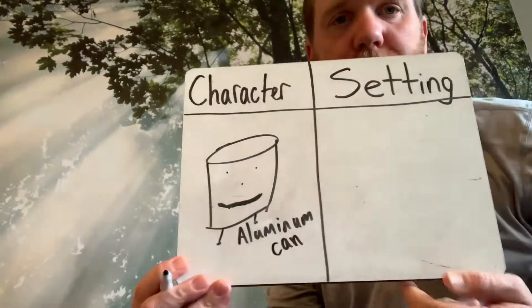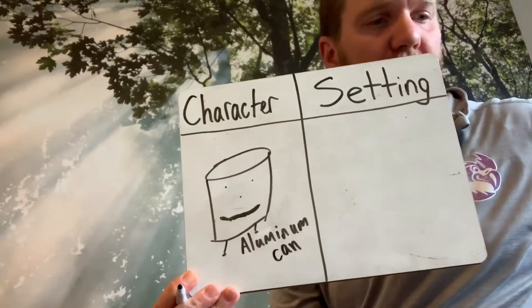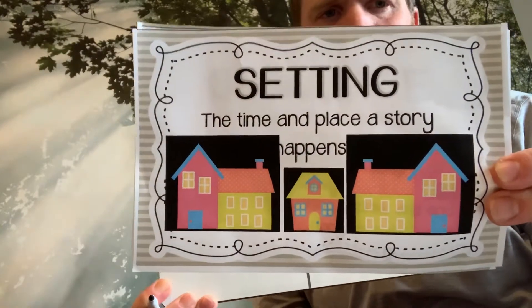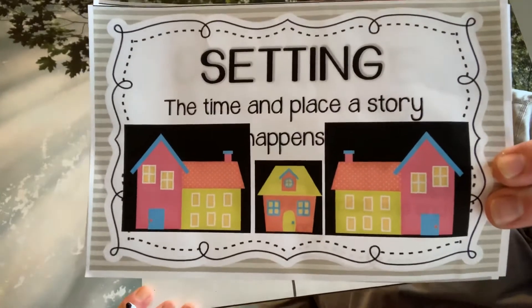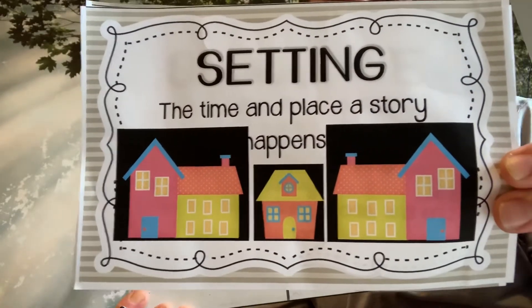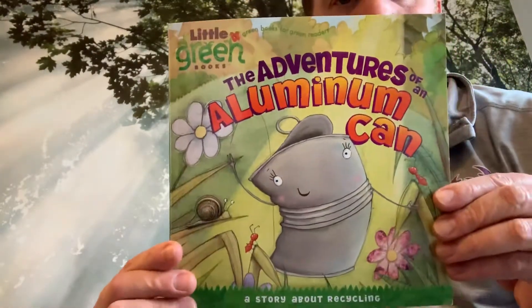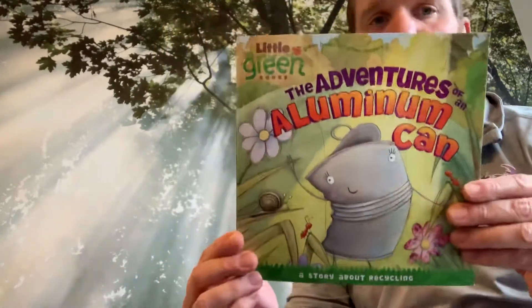Now, good readers, when they're reading a story, they think about where the story takes place. That's called the setting. So, think about this story that we just heard. What was the setting in the story? Where did the story take place? Think of where our character was in the story. Now, this is tricky because our aluminum can had many adventures in many different places. So, our setting was lots of different places.